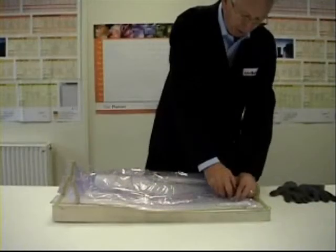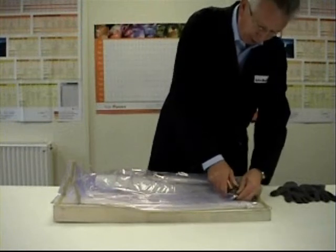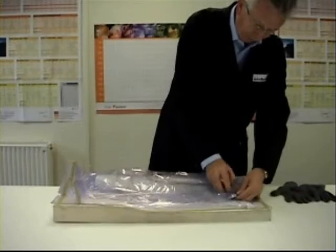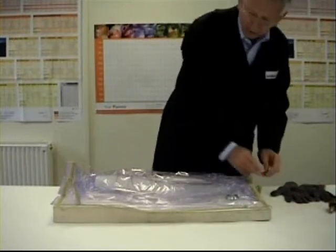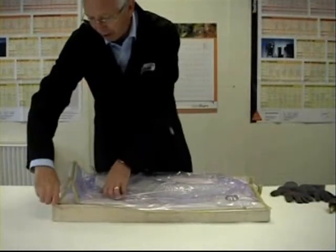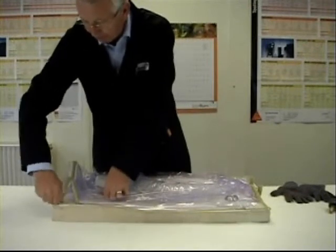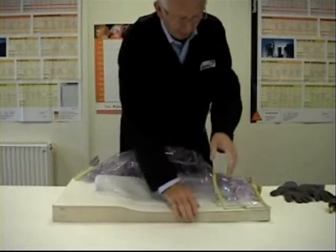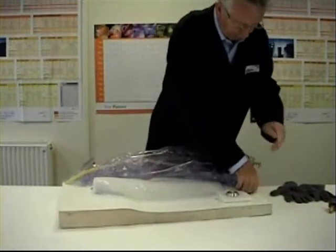So we've come to demold. Take the, unscrew the breach unit off, and then with the tape, just start at one corner, get it going, and then just give it sharp tugs and it will come off.